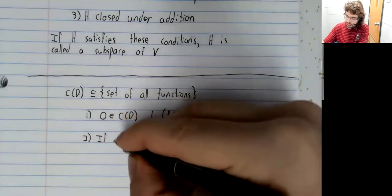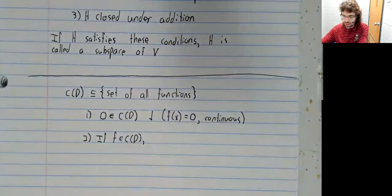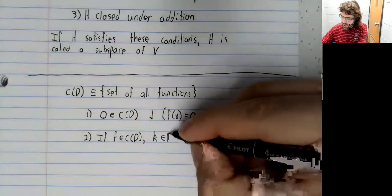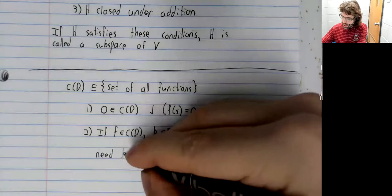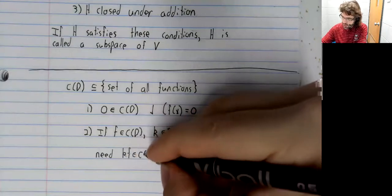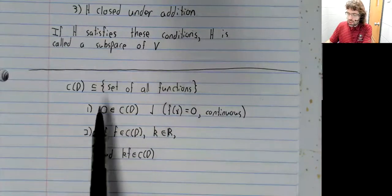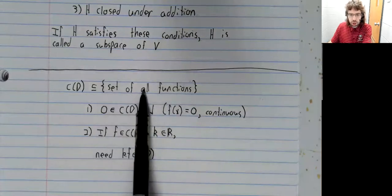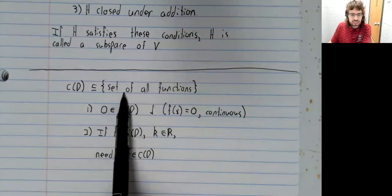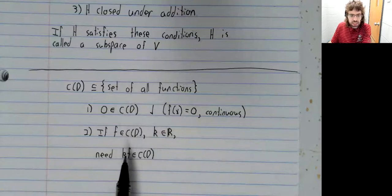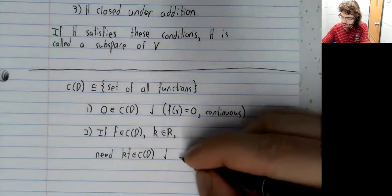Two, if f is in the set of continuous functions and k is any real number, then we need k times f to be in the set of continuous functions. The set of all functions is closed because it's a vector space. So, we know that k times f is in this bigger set. But what we need is for k times f to be in this smaller set. And that's another check.